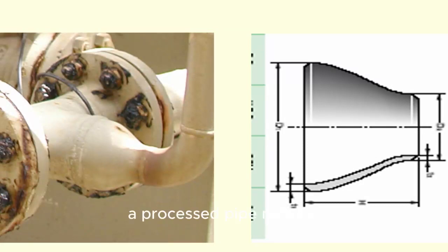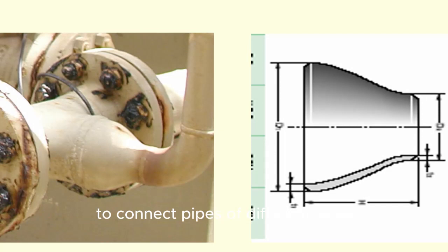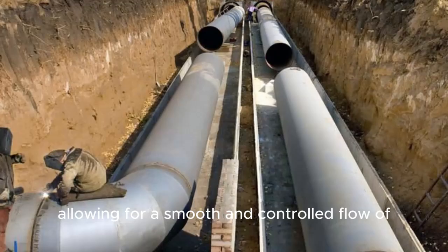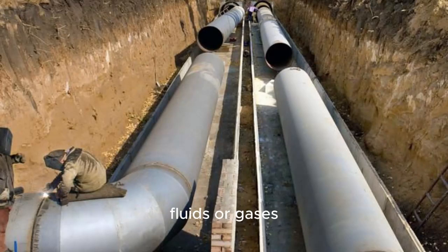A process pipe reducer, in simple terms, is a fitting used in piping systems to connect pipes of different sizes. Its purpose is to reduce the pipe diameter, allowing for a smooth and controlled flow of fluids or gases.